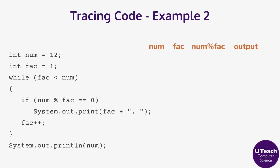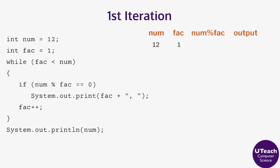The chart for this tracing will have columns for num, fact, num mod fact, and the output. The initial values are num equal 12 and fact equal 1. For the first iteration, fact is less than num so the body of the loop executes. Checking that 12 mod 1 is equal to 0, the output is 1 comma. Fact is incremented to 2.